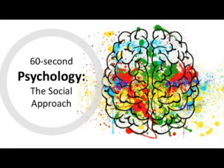Key concepts of the social approach include conformity and stereotypes. These theories are supported by studies such as a study of conformity by Asch, the Stanford Prison Experiment by Haney, often credited as Zimbardo, and Shatar's study of stereotypes: 'How good are you at math?'